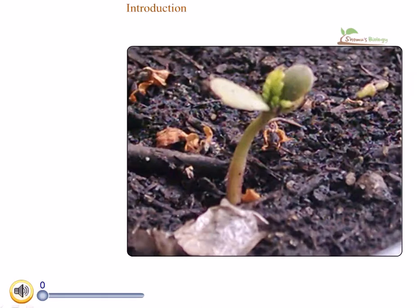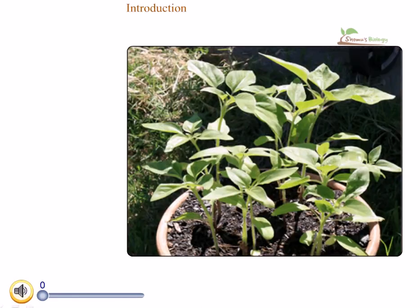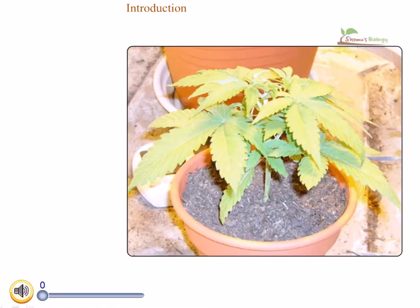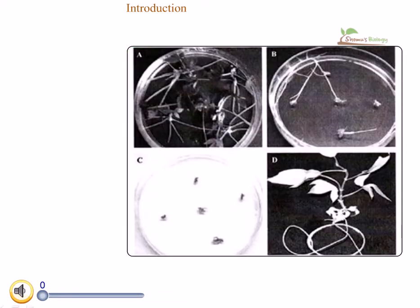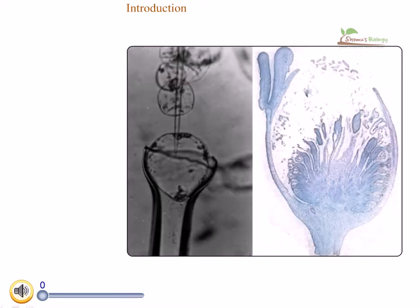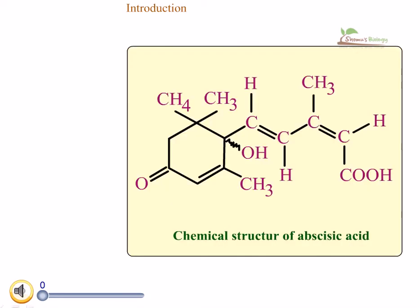In 1950, when Bennett and Clark found there is a growth-inhibiting hormone among the plant hormones, they also found that this hormone causes leaf drop and bud dormancy. Later this hormone was named as abscisic acid.